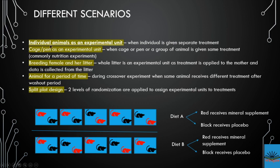To summarize the scenarios: individual animal is the experimental unit when each animal is given a separate treatment and housed in a separate cage. The cage or pen is the experimental unit when a group of animals in that cage has been randomly assigned to a particular treatment. This is common in nutritional experiments.